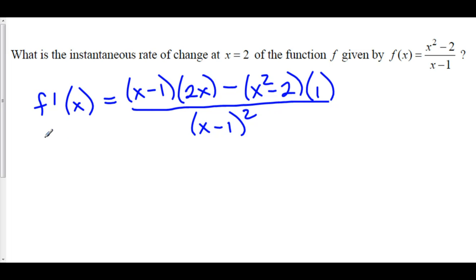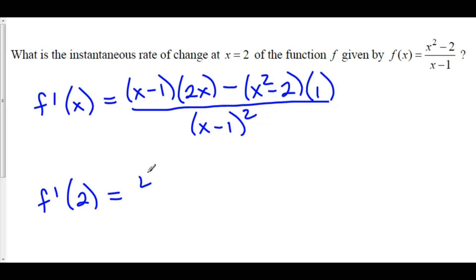You could make f prime of x look a bit nicer; however, that's not the point here. The point here is to find the derivative at x equals 2. So let's just plug in 2. F prime of 2 is equal to 2 minus 1 times 2 times 2, that's 4, minus 2 squared is 4 minus 2 is 2, all over 2 minus 1 squared, that's 1. So f prime of 2 is just 2.